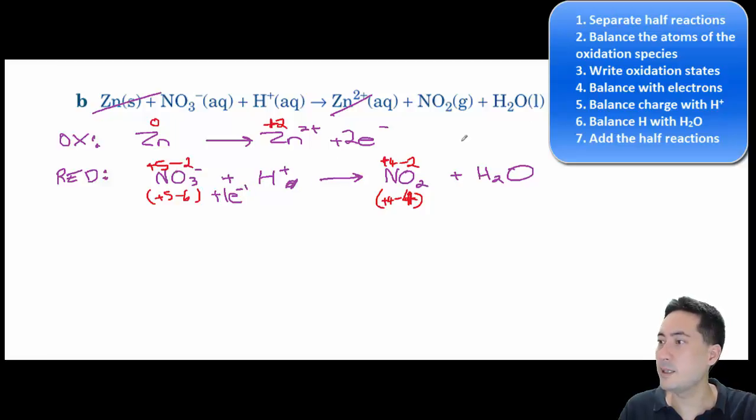The next thing, the last one, is balance charge with H+. What do we have here? There's nothing here, so that's a neutral charge. We'll get this to neutral. There's a minus there and a minus there and a plus there, so there's a total of minus one. Let's add another H+ over here, and that gets us to zero.